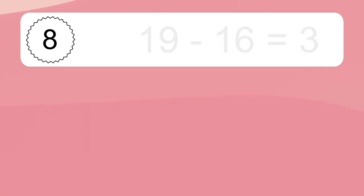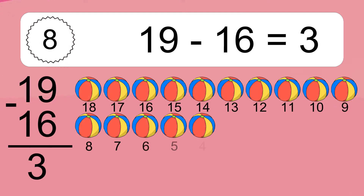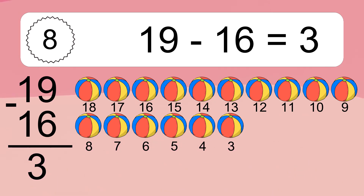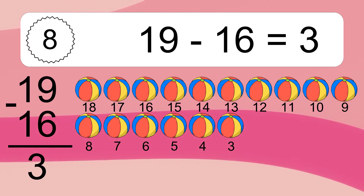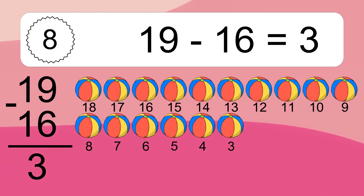19 minus 16 equals 3. Let's count it: 18, 17, 16, 15, 14, 13, 12, 11, 10, 9, 8, 7, 6, 5, 4, 3.